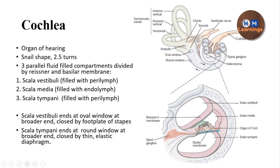This is a snail-shaped organ. You can see here this is the inner ear, which has semicircular canals and otolith organs, and here is the cochlea shown at the cross-section level. The cochlea has three fluid compartments, which are divided by Reissner's membrane (the vestibular membrane) and the basilar membrane.